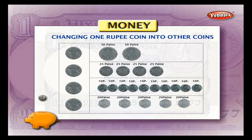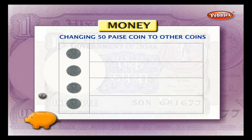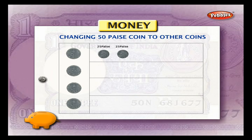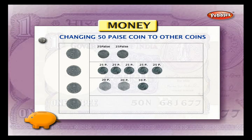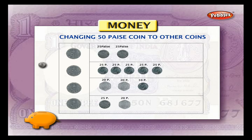In the same way, a 50 paisa coin can be replaced by 2 twenty-five paisa coins, or 5 ten paisa coins, or 2 twenty paisa coins and 1 ten paisa coin, or 1 twenty-five paisa coin, 1 twenty paisa coin and a 5 paisa coin.